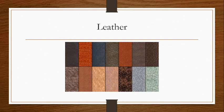We can pretty much do the tanning process to any animal we choose. However, there are many animals that are more prevalent than others. We can make leather out of pretty much anything with skins — even fish. The only thing we really can't make leather out of is insects. Anything else with a skin and not an exoskeleton, we can make leather out of.